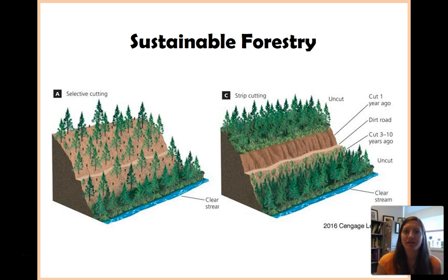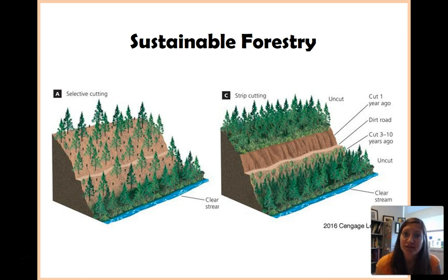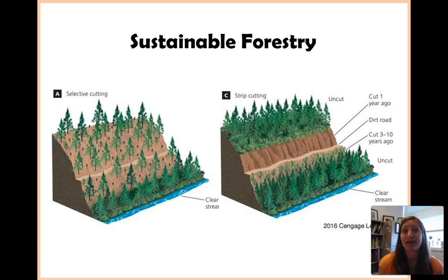But we can do something about it. We recognize that we need timber resources and that we need to use this, but we can do it in a better or more sustainable way. For example, we have selective cutting — here you're choosing certain species or certain individuals to take from the forest. Maybe these are the older trees, maybe the bigger trees, maybe the smaller ones or the deformed ones. Maybe you're choosing past a certain size, taking the older and bigger ones and leaving the younger ones there to grow.